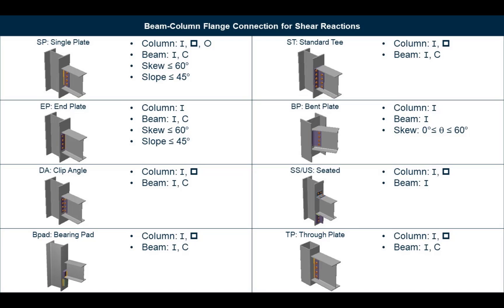RAM Connection can design connections for a variety of joints. During the connection design process, we will assign connections to the different joints using the RAM Connection database of predefined connection templates, which are separated into different connection families. As we start designing connections, we will select joints within the same connection family with similar forces so they can be designed together.